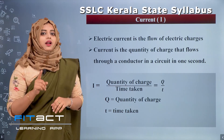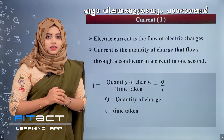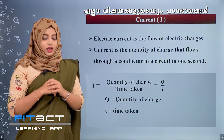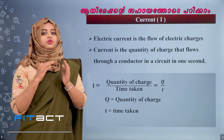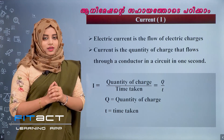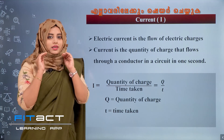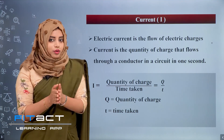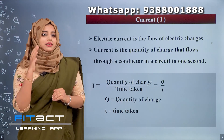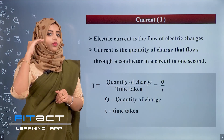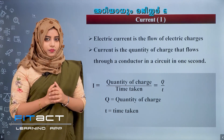Current is the quantity of charge that flows through a conductor in a circuit in one second. If one second, 10 Coulomb of charge flows, the current is 10 Ampere. If 20 Coulomb of charge is flowing, the current is 20 Ampere. Coulomb is the unit of charge. What is the current if 100 Coulomb of charge flows for 10 seconds?